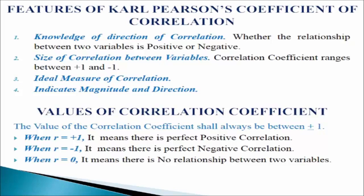Third point, ideal measure: it is an appropriate measure of correlation as it is based on the most important statistical measures like mean and standard deviation. Fourth point, indicates magnitude and direction: the coefficient of correlation not only specifies the magnitude of correlation but also its direction. If the two variables are directly related, the correlation coefficient will be positive, and in case of inverse relationship we will get a negative correlation coefficient.